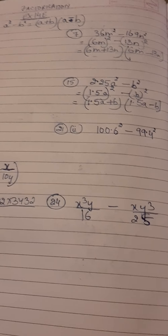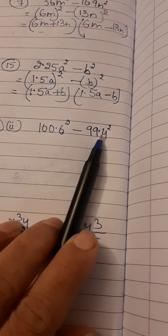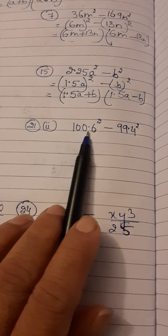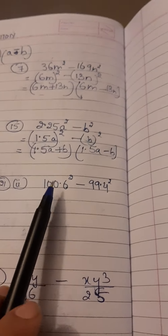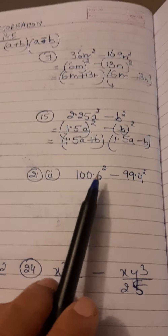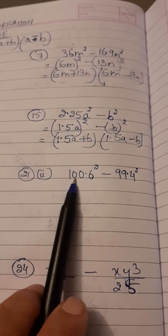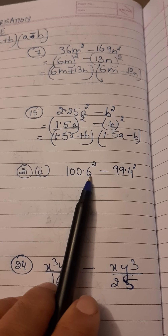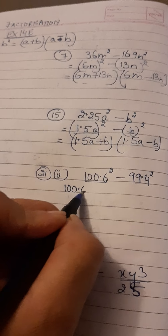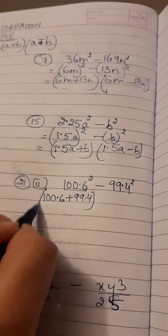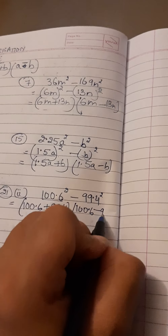Now I am taking up question 21, second part, which says simplify. The numerical numbers are given to you in the form A² minus B². We are going to change them into that form first. Taking 100.6 as A and 99.4 as B, we write (100.6)² minus (99.4)², and apply the formula to get (100.6 + 99.4)(100.6 − 99.4).